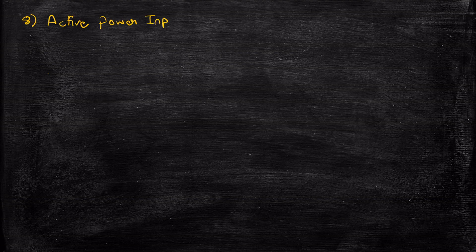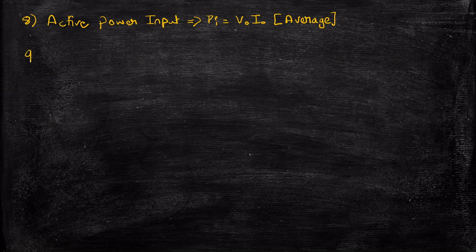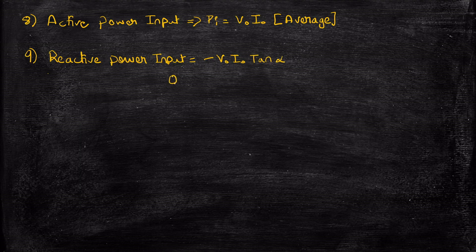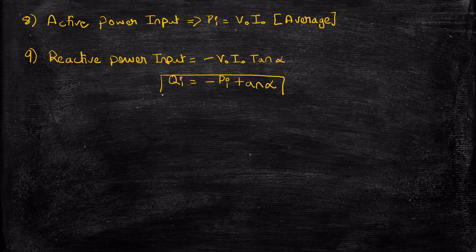The eighth important parameter is active power input, given as Pi equal to Vout times Iout (average values). The ninth factor is the reactive power input, QI, given as minus Vout·Iout times tan(alpha). Since Vout·Iout equals Pi, the reactive power equals minus of active power times tan(alpha). So this is the reactive power input.